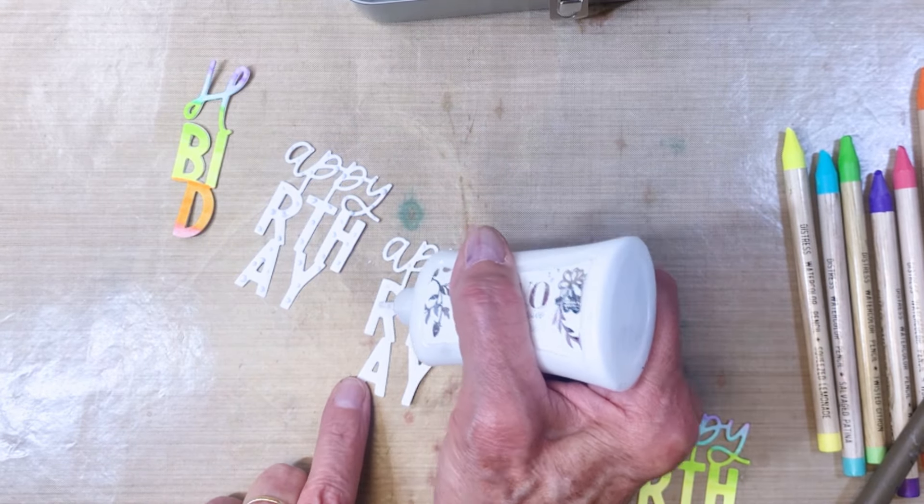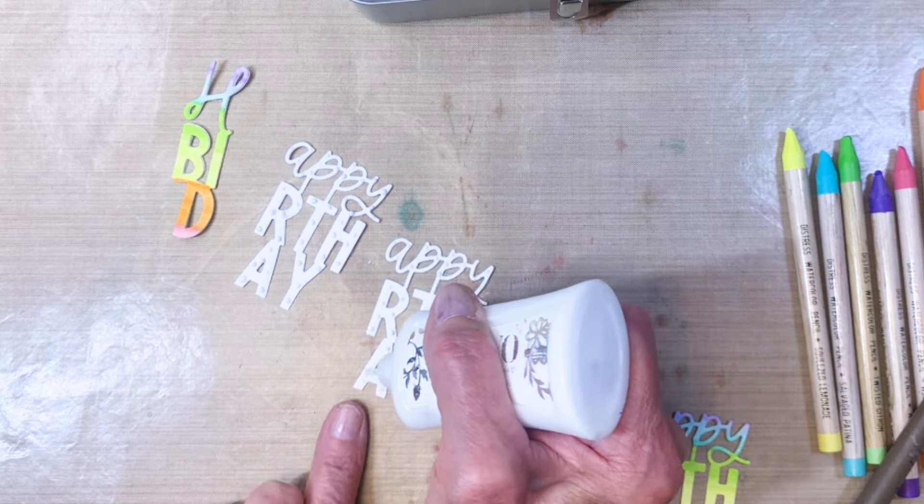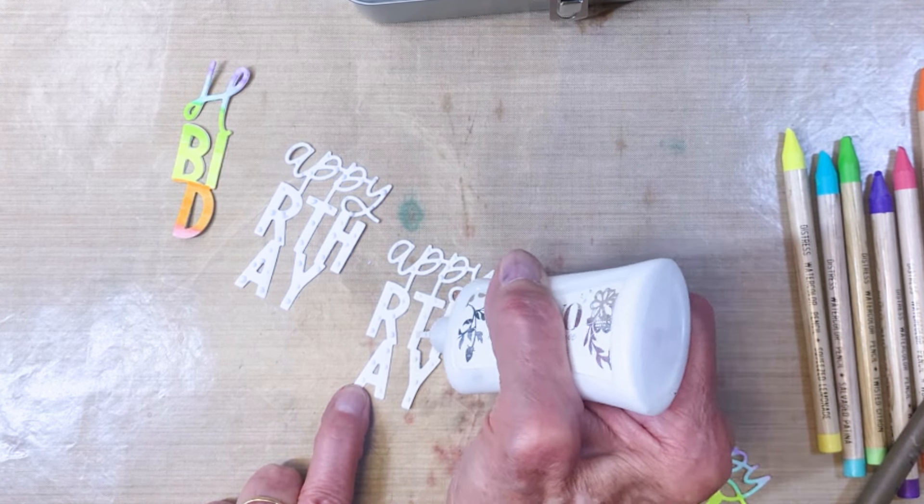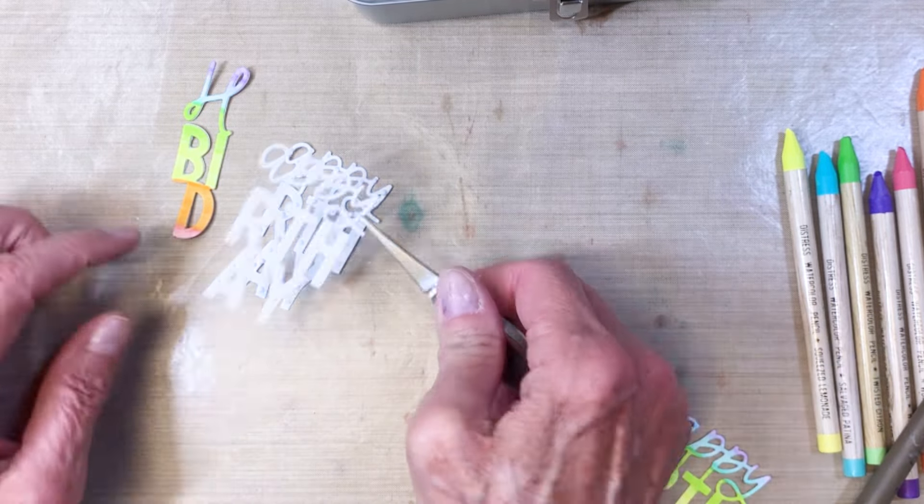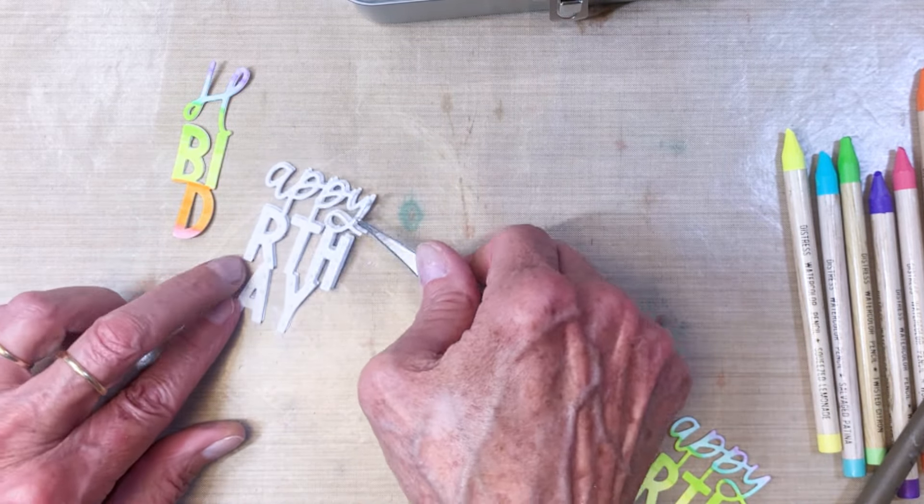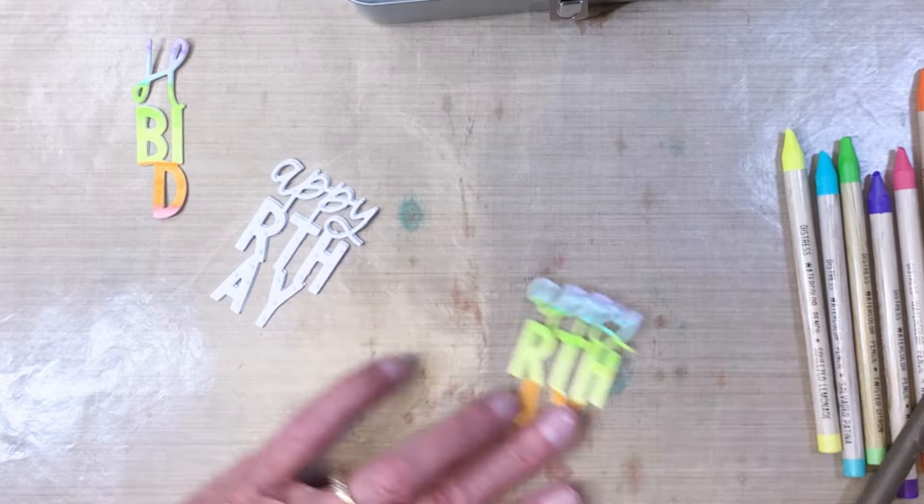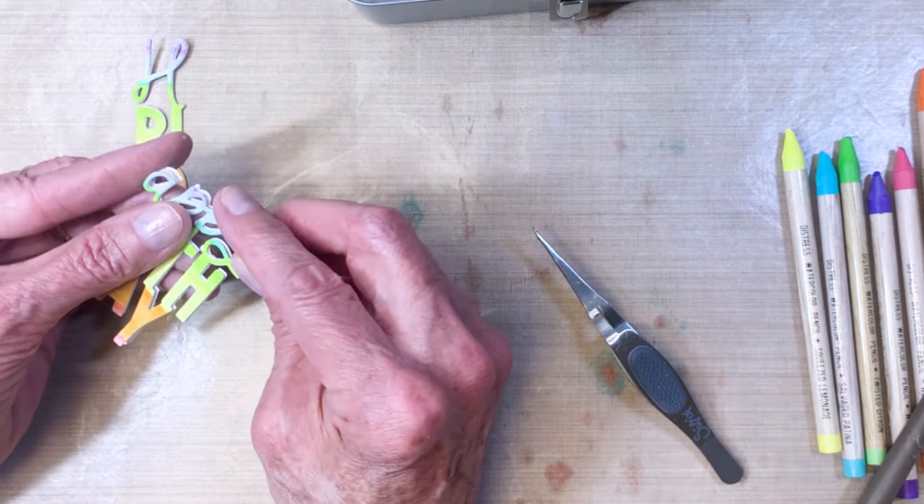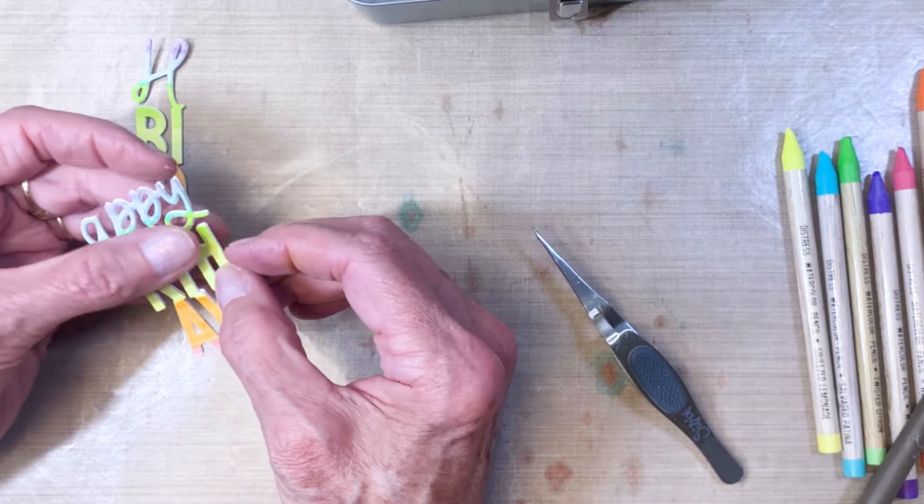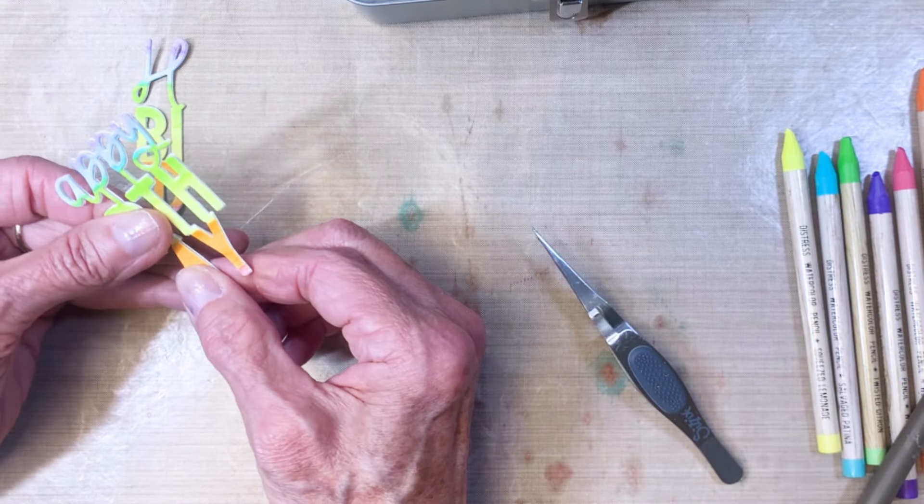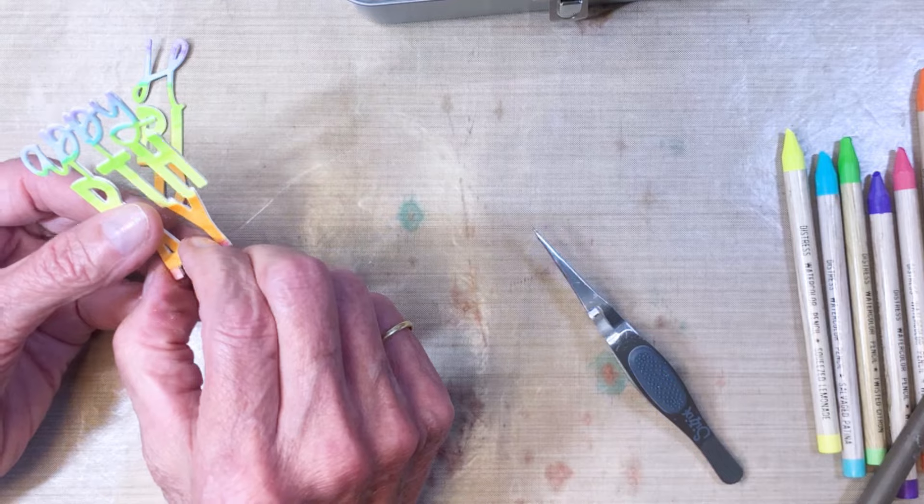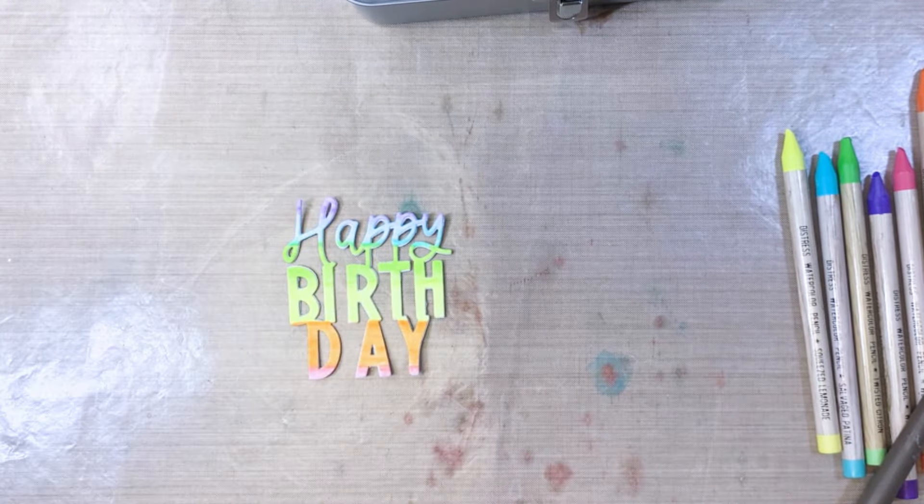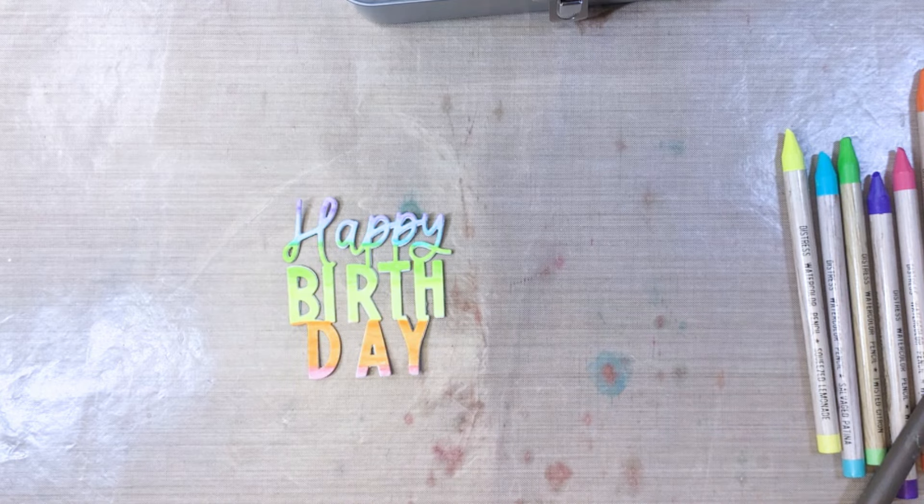I wanted to pop the words out and you can see here I'm using my Nuvo adhesive to attach all of the letters and pop them up. Then I'll add these on a white background. Just making sure I've got my words all together here and that's how they're going to go on that white background.